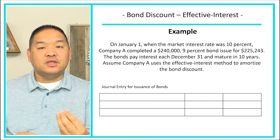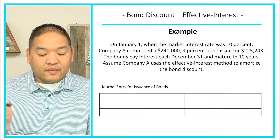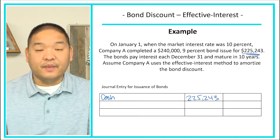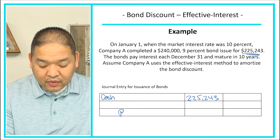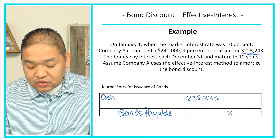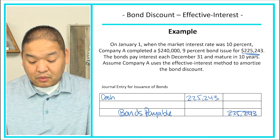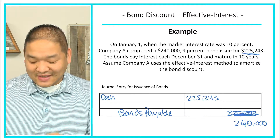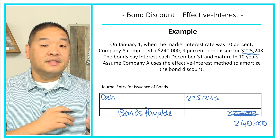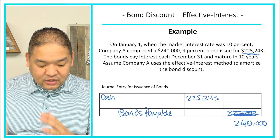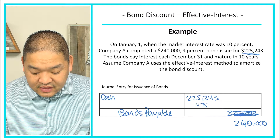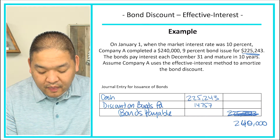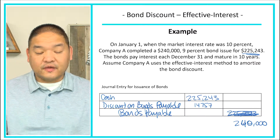For the journal entry at issuance: we debit Cash for $225,243 since that's what we received. We credit Bonds Payable for $240,000 because that's what we owe. The difference — $14,757 — is debited to Discount on Bonds Payable to make debits equal credits. So: debit Cash $225,243, credit Bonds Payable $240,000, debit Discount on Bonds Payable $14,757.